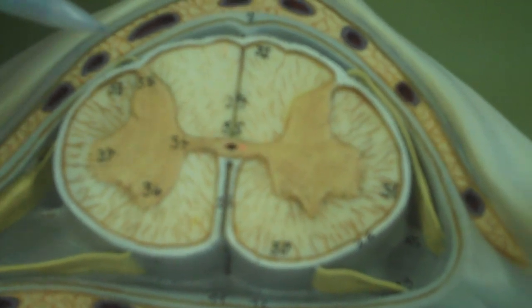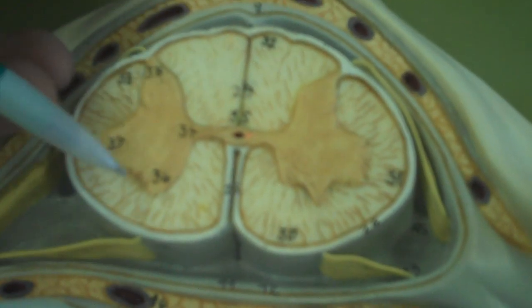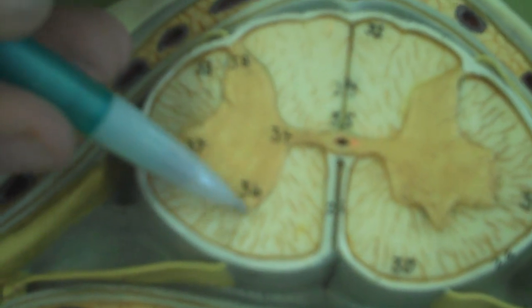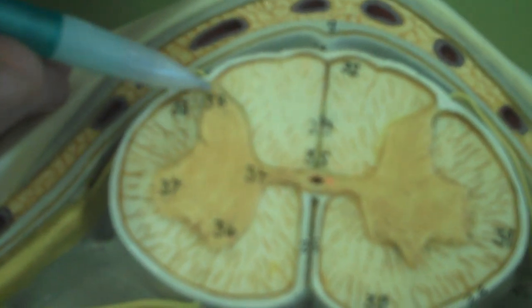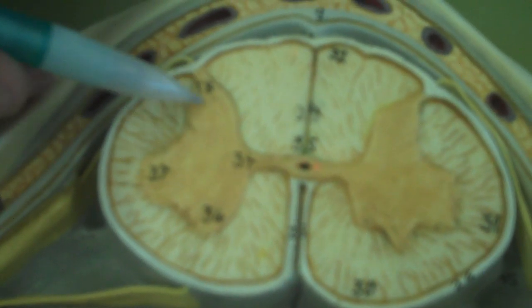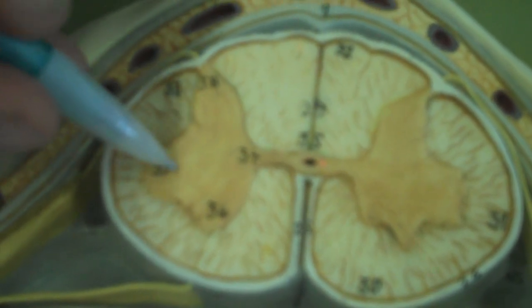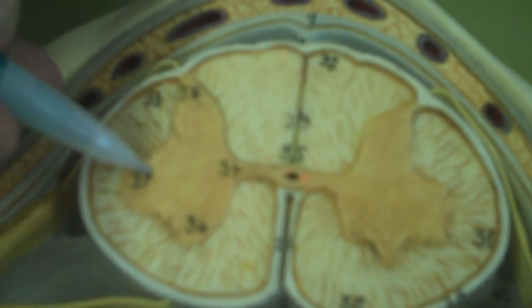The gray matter in particular is what we need to talk about. You can see that there's three horns as they're called on this model. On the front you have the ventral horn. On the back, you have the dorsal horn, and on the side you have the lateral horn, also known as the column.